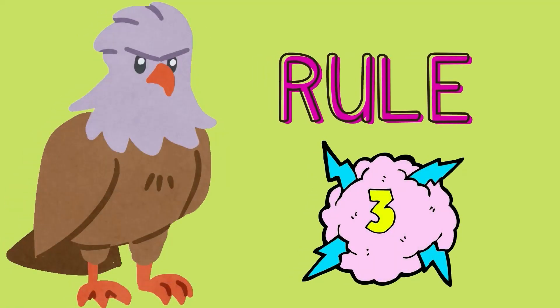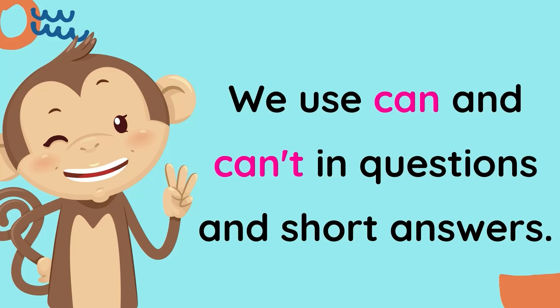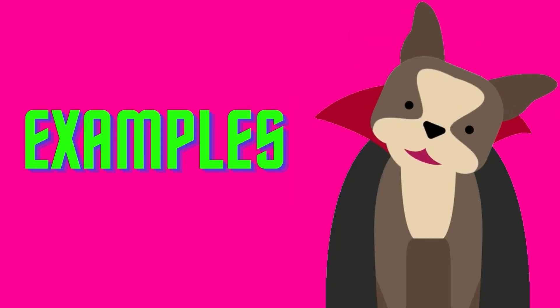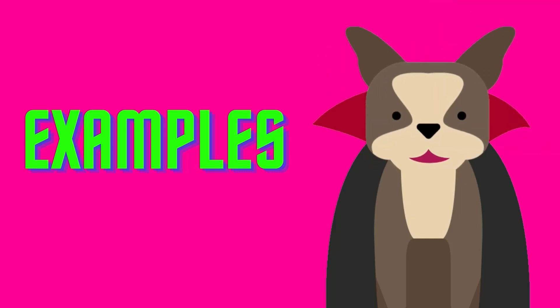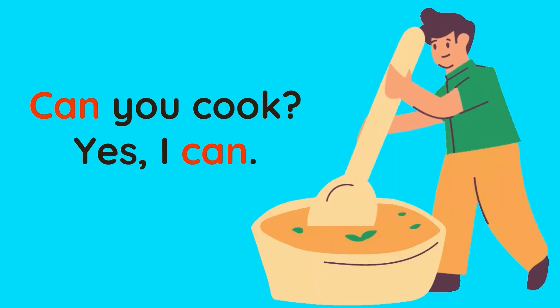Rule number three: we use can and can't in questions and short answers. We form questions by putting can before the subject. For example, the question is: can you cook? And the answer is: yes, I can.